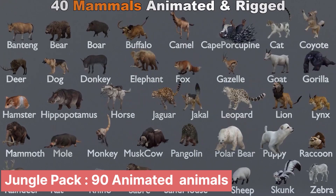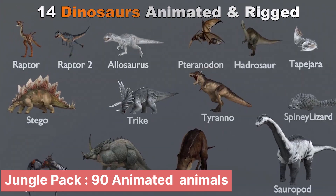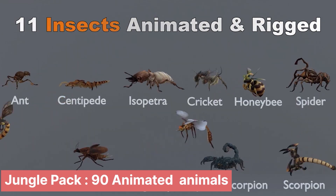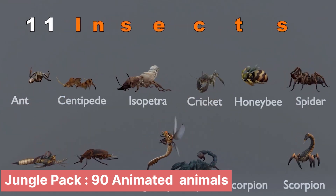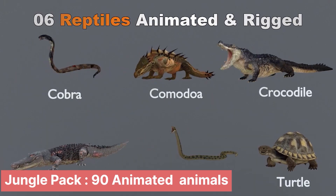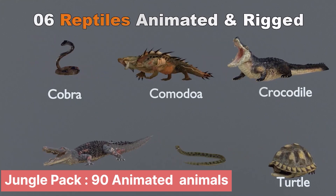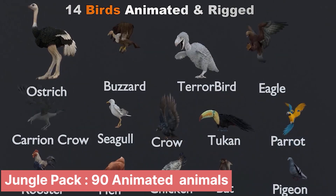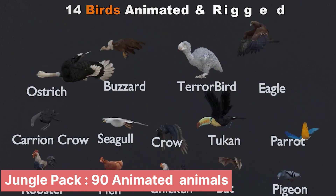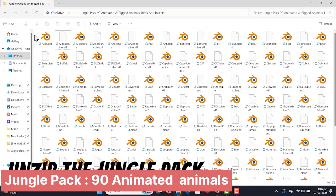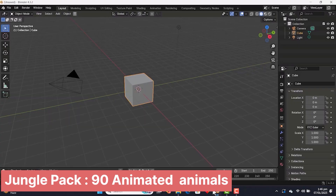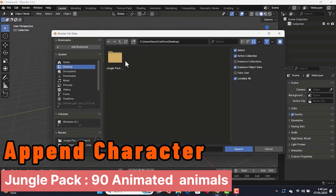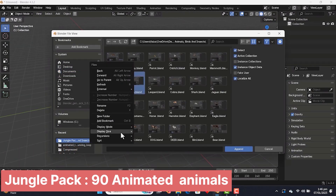Similarly, here is another collection, but this time it's a set of about 90 rigged, animated, and textured animals. Unlike a basic model pack, this collection comes fully prepared, featuring creatures ranging from dinosaurs to domestic animals like cats, cows, lions, tigers, and more. Each model is professionally rigged and animated, making them ready for immediate use in games, films, and simulations, without the need for additional rigging or animation work.